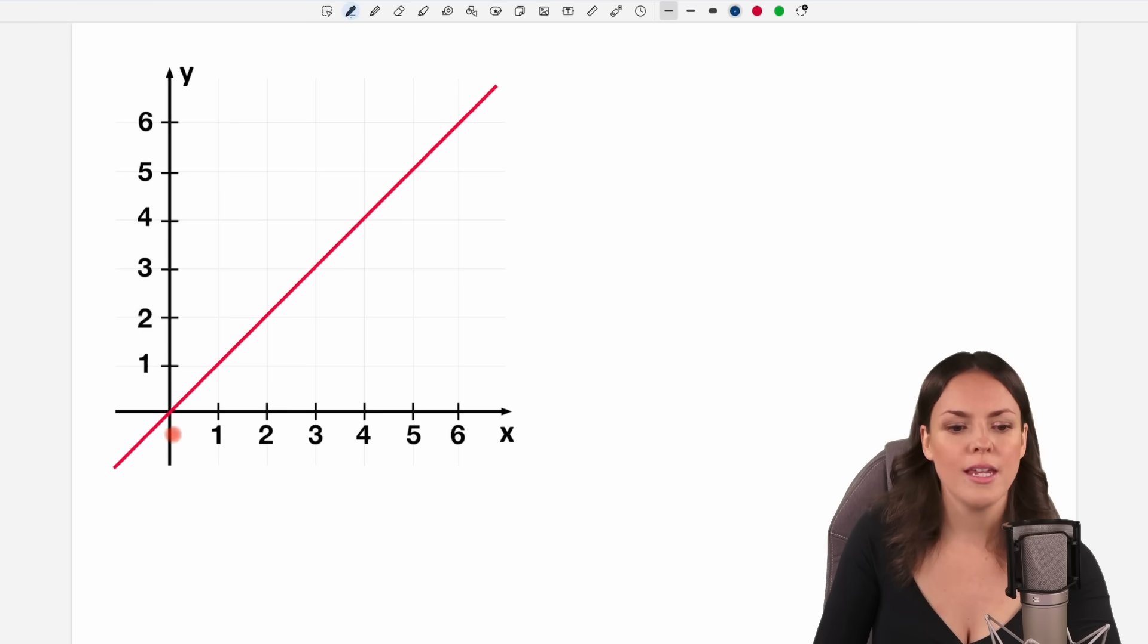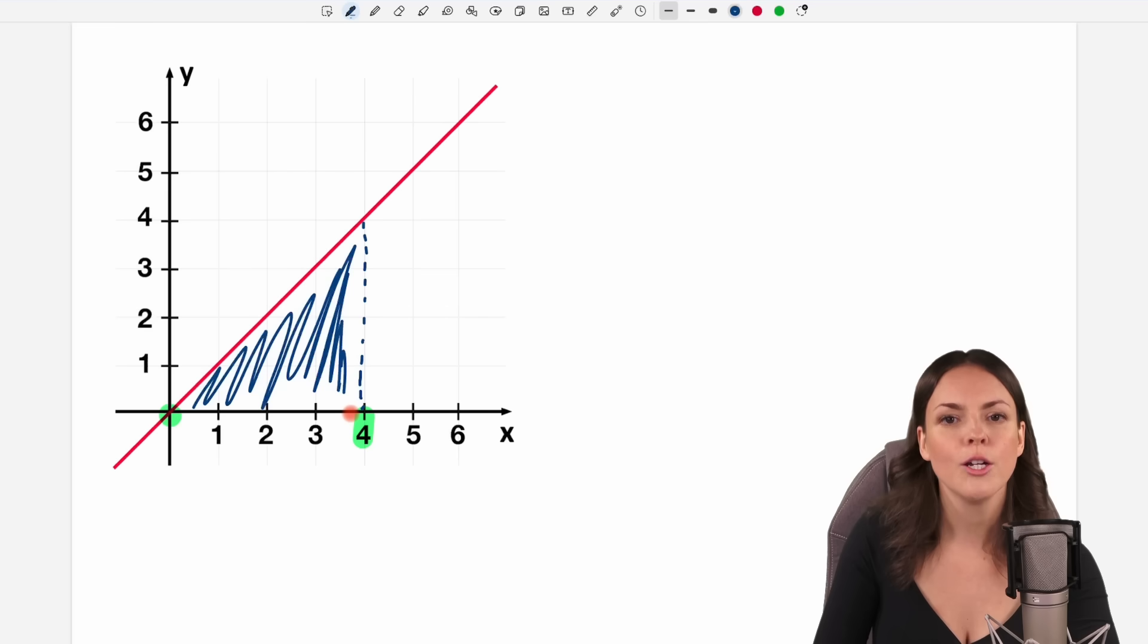For example, if you want to find the area from 0 to 4 between my function here, my red function and the x-axis, if you want to find the size of this area, you can use an integral.